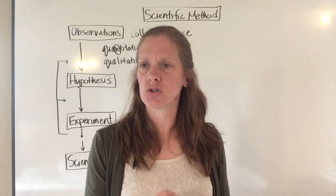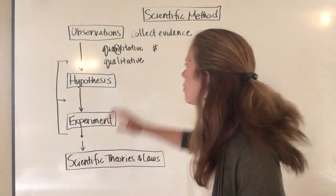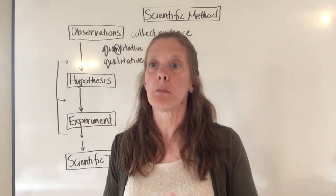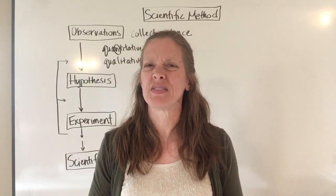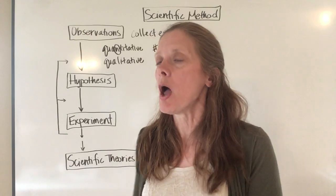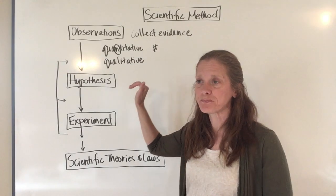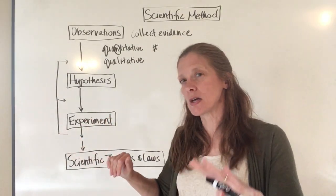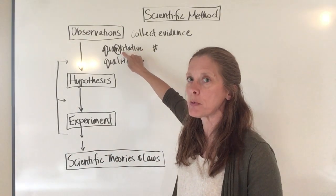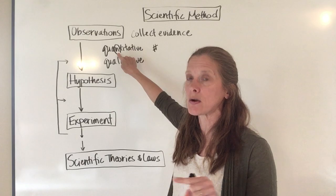A qualitative observation does not have a number — it may be something like 'the mold is red and fuzzy' or 'that smells like rotten eggs.' Those are two types of observations. And just as a point of reference, if I've given you a memory tip for how to remember something — like that N helping you remember there's a number in a quantitative observation — you can probably expect to see that question come up later on.